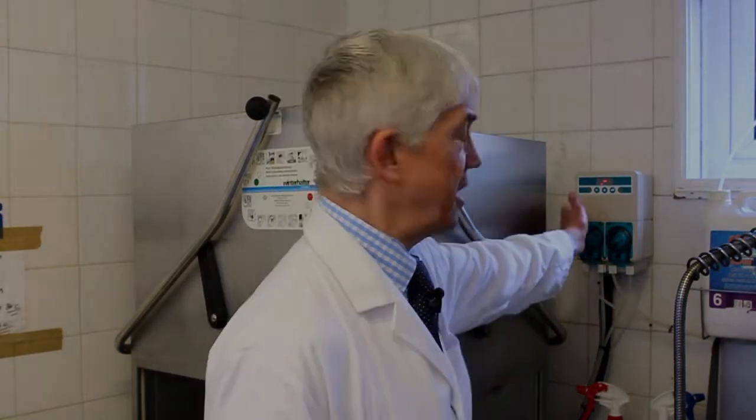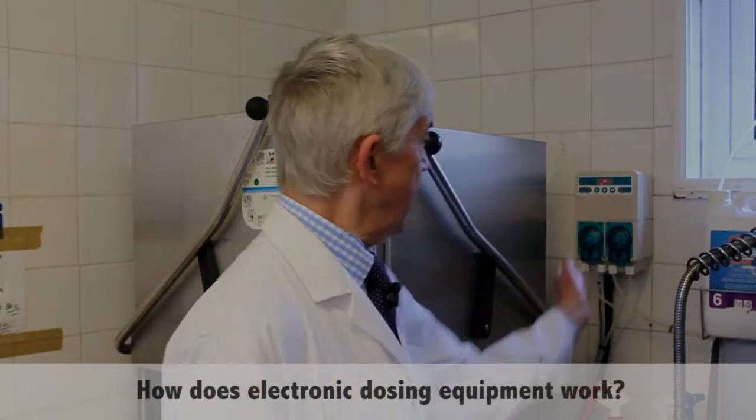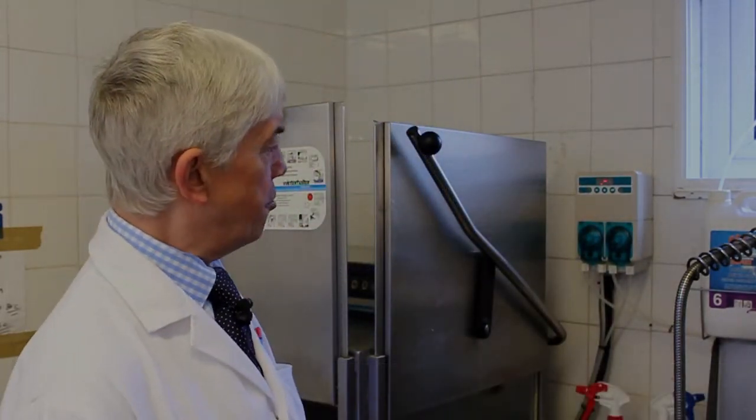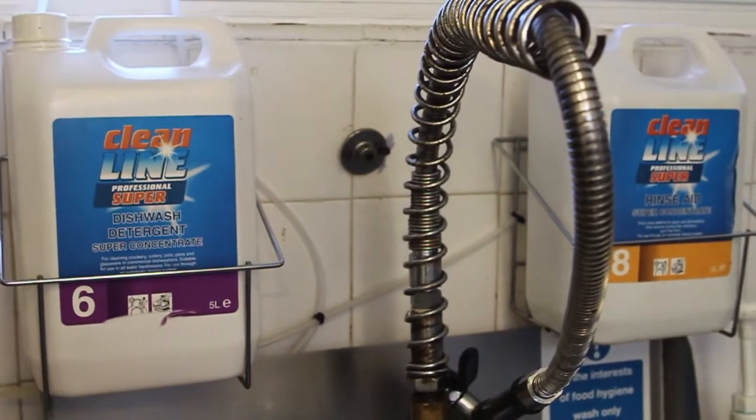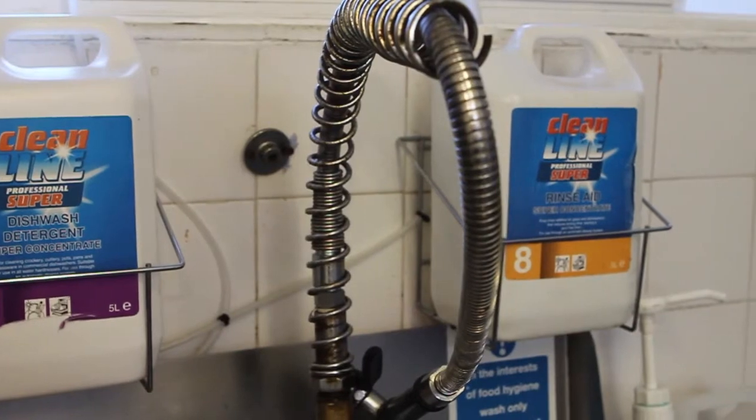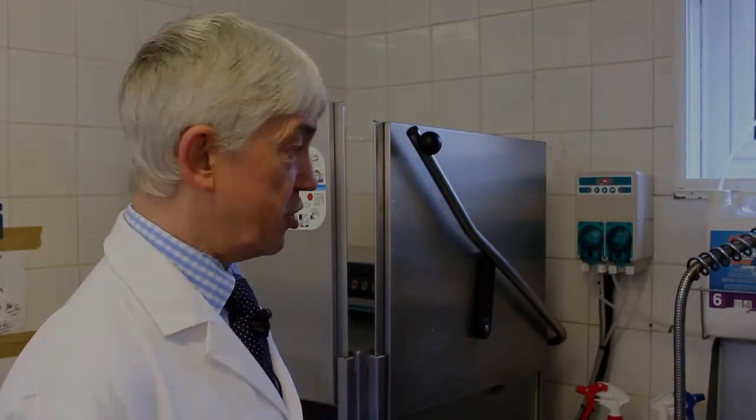This thing here is called an electronic dosing unit and its job is to pump in the right amount of dishwasher detergent and the right amount of dishwasher rinse aid so that it's economical to use because you don't want to put too much in but it does a really good job and that's what this clever piece of equipment does.